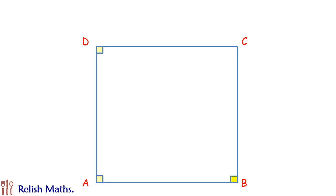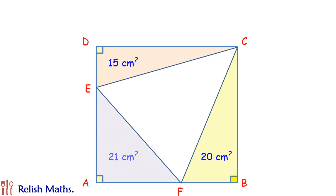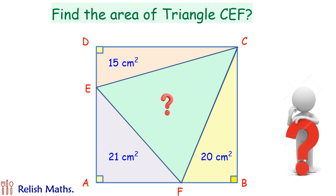Let's check today's question. ABCD is a square. Inscribed in it is a triangle. Given to us is the area of triangle DEF is 15 cm squared. For triangle CBF it's 20 cm squared, and triangle AEF is 21 cm squared. Using this data we have to find the area of triangle CEF.